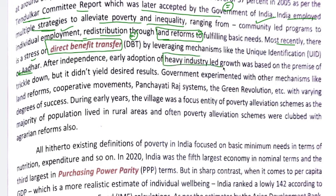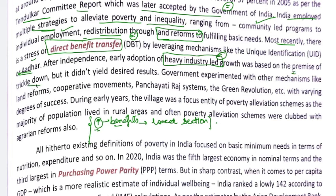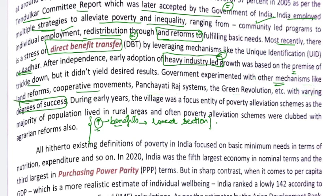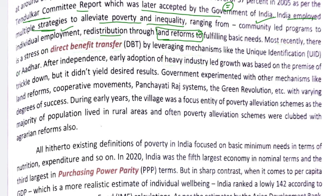After independence, heavy industry growth was prioritized. The idea was that if industries improved, their benefits would trickle down to the poorest sections including rural people. However, industries did make profits, but those profits did not reach the poorer sections. The government then tried other mechanisms — cooperative movements, land reforms, panchayati raj, and the Green Revolution — but these also had varying degrees of success. Cooperative politics favored the rich; land reforms and cooperative movements also had limitations.